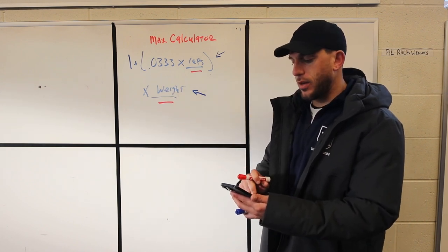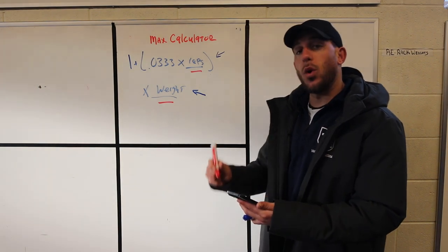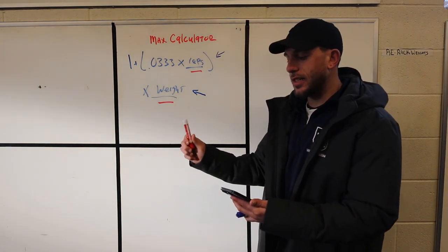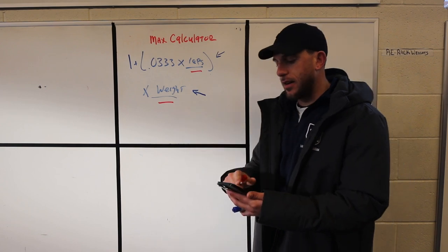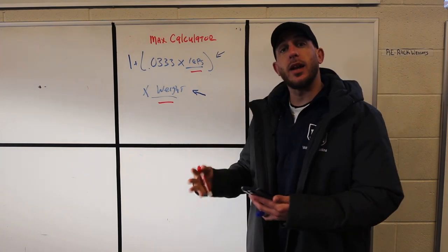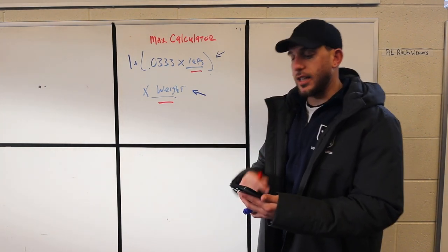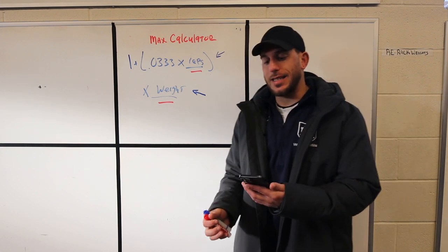We get 1.2664, and then we times that by 135 because that's the weight we performed the set with. That's 170.964.